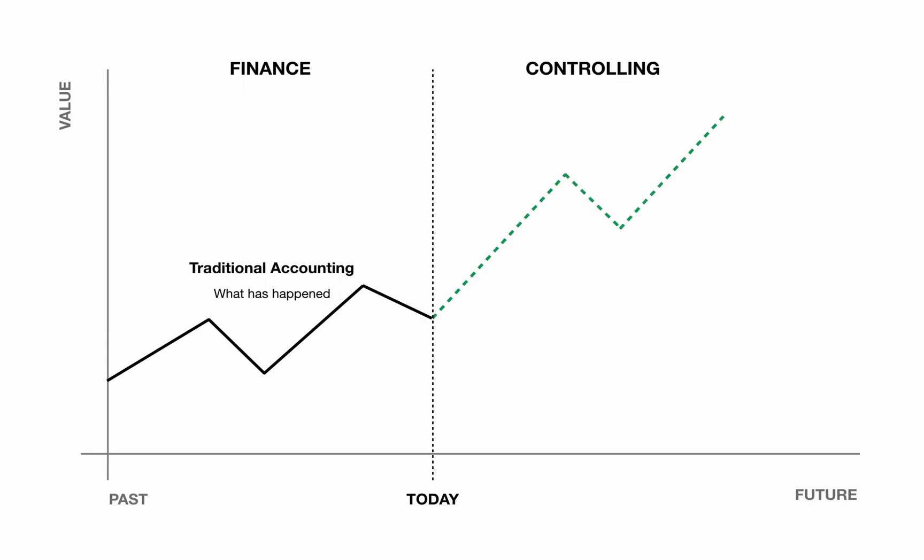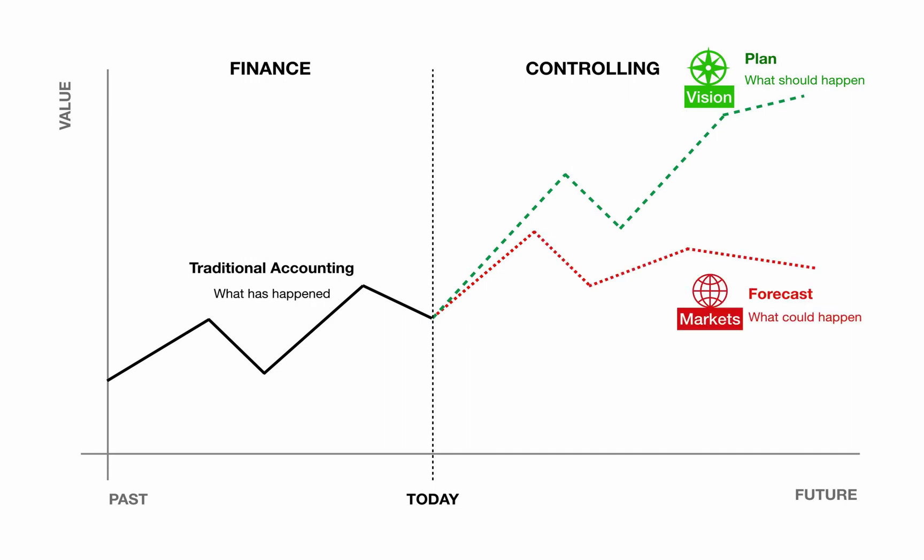In SAP Enterprise Central Component, the planning and forecasting function was technically separated from accounting by means of tables and transactions. In the company itself, there is often an organizational separation into different departments. The disadvantages of the separation were two different universes — finance and controlling — each with their own terminology, key figures, processes and reports. This often led to misunderstandings and misaligned goals.